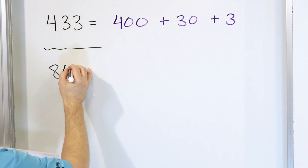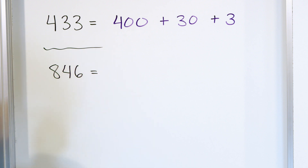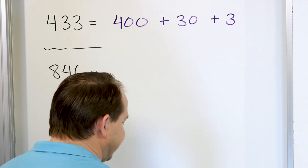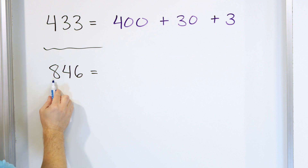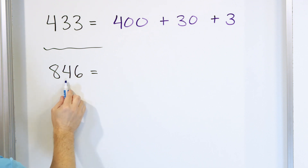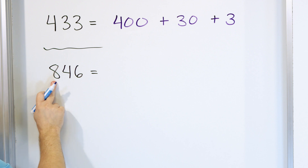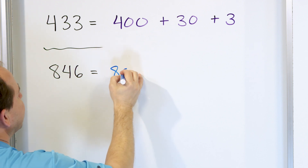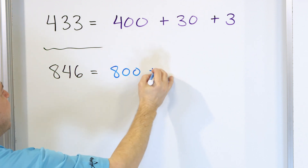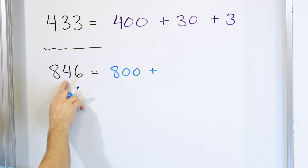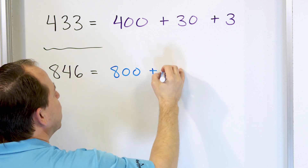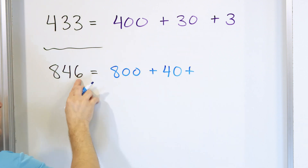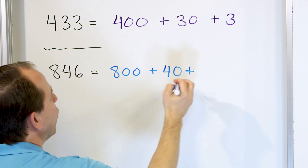What about the number 846? Write this out in expanded form. You would say, what is the value of 8? Well, this 8 is in the hundreds place — ones, tens, hundreds — so this is actually not worth 8, it's really worth 800. And then what is the value of this 4? Of course it's not worth 4; it's worth 40, because it's in the tens place in 846. And the value of this is really 40. And the value of the 6, of course, really is 6 because it's in the ones place.